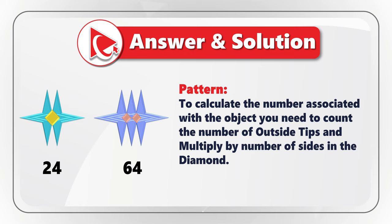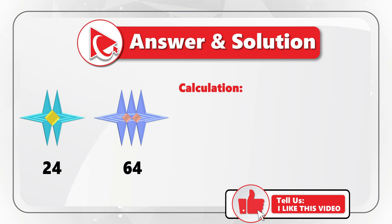Let's look at the example. The first set of blue stars has six tips — one, two, three, four, five, and six. And it only has one diamond, which is represented by four sides. Six multiplied by four equals 24.